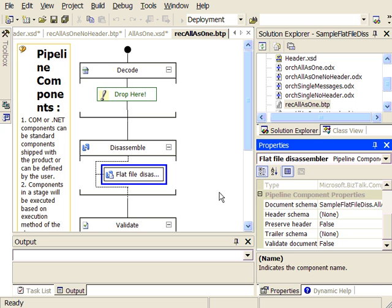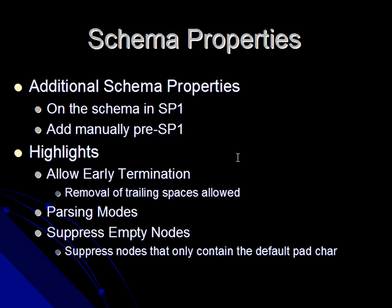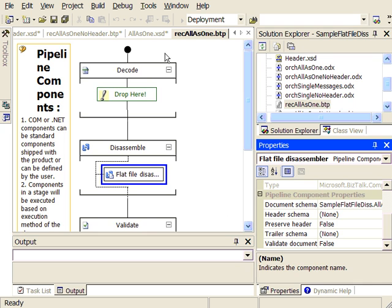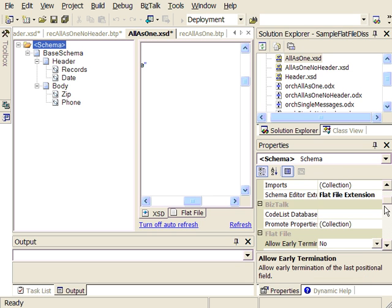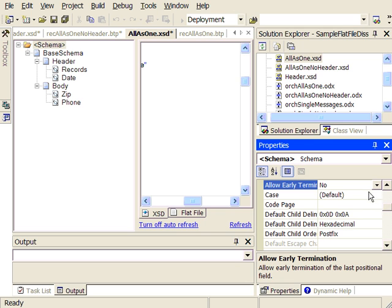That's a quick overview of the flat file disassembler sample available from our website. There are some additional flat file schema properties available. If you're not using BizTalk SP1, these schema properties have to be manually added to the XSD by opening it up inside Notepad and adding these properties. If you are running BizTalk Server Service Pack 1, these are available in the UI — clicking on the schema tab will show these properties.